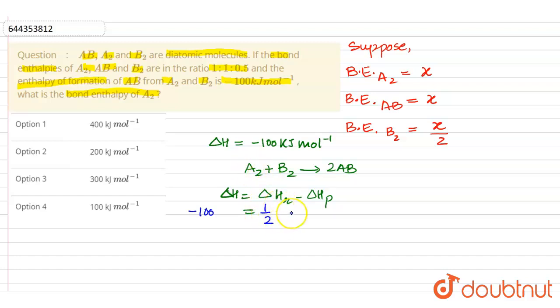x by 2 because it's B2, and the whole would be minus the enthalpy of product which is AB. Now that is x. By solving this